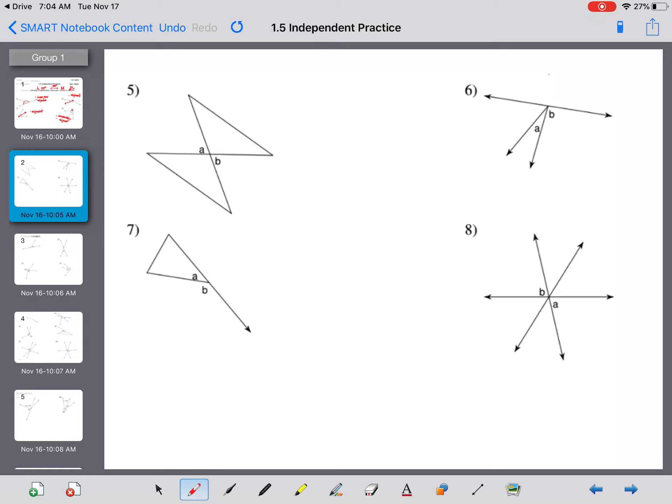Same deal here. You have A and B, but look, they make that bow tie shape that we were talking about. Those are vertical. A and B here, now be careful. Although we do see a straight line, angles A and B do not make that straight line. So these are just adjacent.